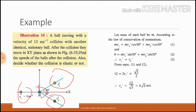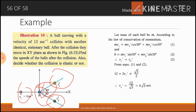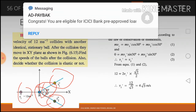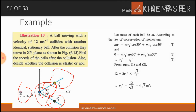For the solution, let the mass of each ball be m. According to the law of conservation of momentum, since masses are equal: m*v1 = m*v1'*cos(30°) + m*v2'*cos(30°) ... (equation 1). For the y-direction, momentum is zero: 0 = m*v1'*sin(30°) − m*v2'*sin(30°). From this, v1' = v2' (equation 3).